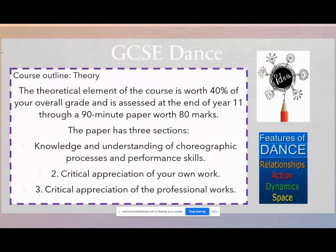The theoretical element of the GCSE is worth 40% of your overall grade. Although it is studied throughout the entire course, it is only assessed at the end of Year 11 through a 90-minute paper that's worth 80 marks. The paper has three sections to it.